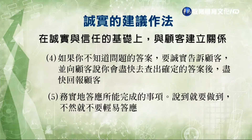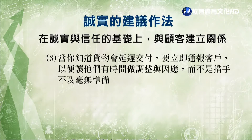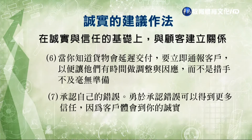第三是藉由無私與奉獻，展現你真的關心顧客，並把焦點放在顧客的需求上。第四是如果你不知道問題的答案，要誠實告訴顧客，並說你會儘快查明確定的答案後快速回報。第五是務實地答應所要完成的事項，說到就要做到，不然就不要輕易答應。當你明知貨物可能週五才會到，你就不要承諾週四交貨，在承諾一件事之前要先確保你有辦法解決。第六是當你知道貨物會延遲，要立即通報客戶，讓他們有時間做因應調整。第七是要承認自己的錯誤，勇於承認錯誤可以得到更多的信任。